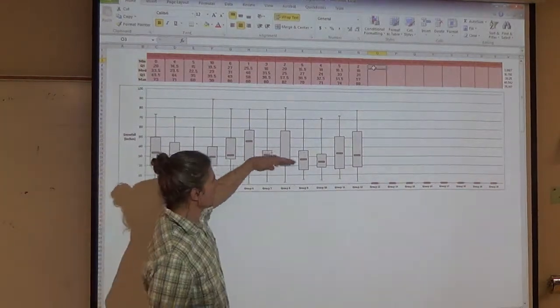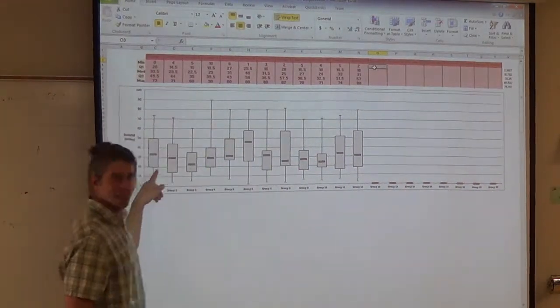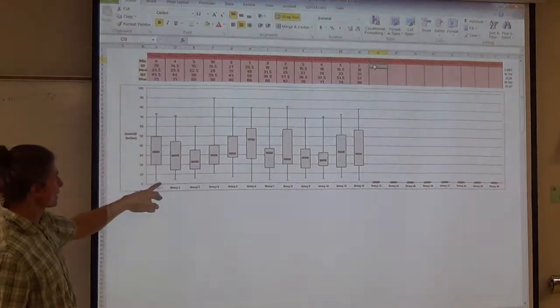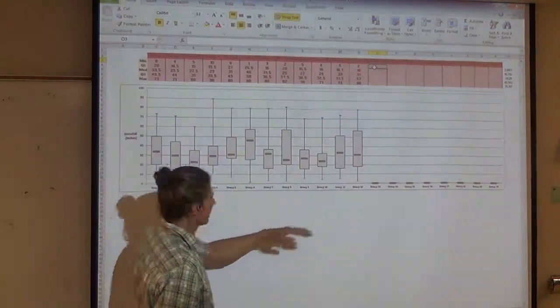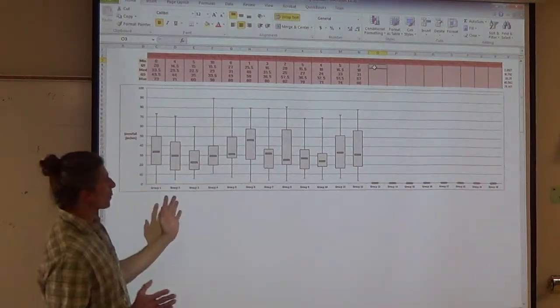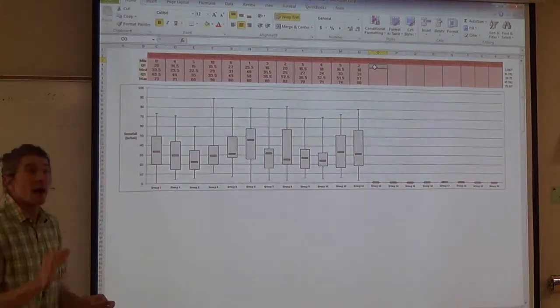But these guys all kind of hung around the middle here. Very, very nice. Same as the mids. Again, sometimes you get the really low ones, but they're pretty much hovering right around here. Medians, quartiles doing the same thing. Every once in a while, you get a spike.